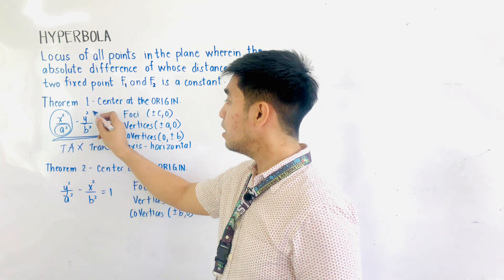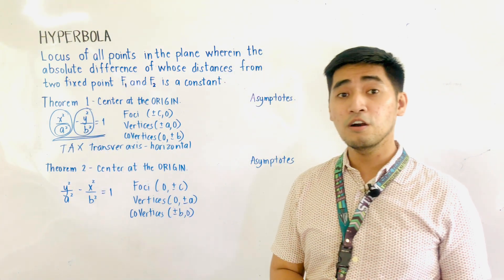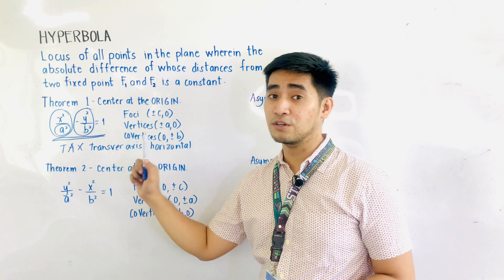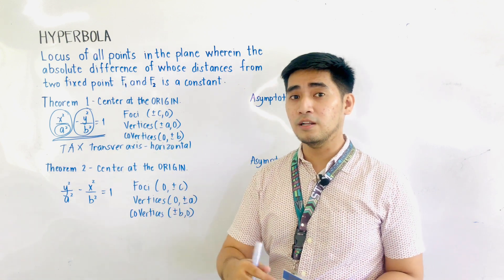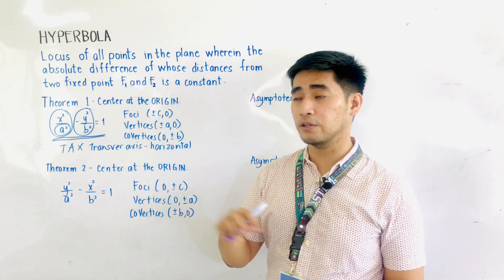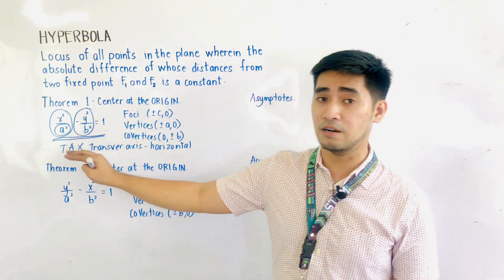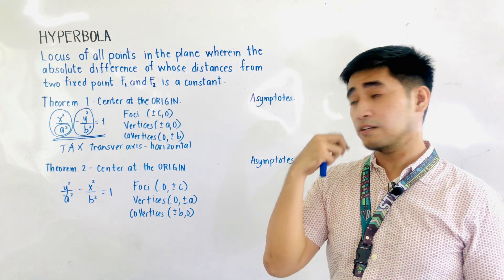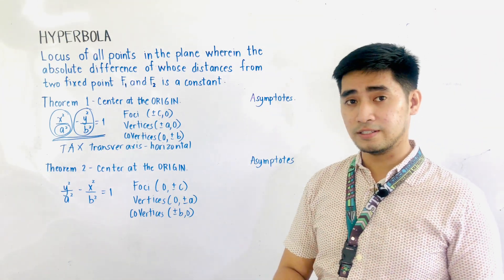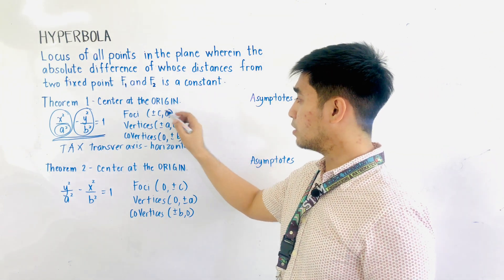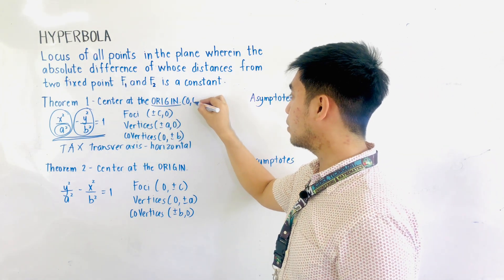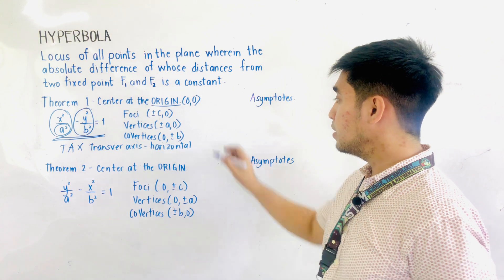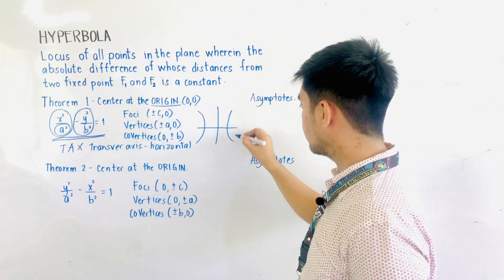If that is the transverse axis, therefore y² / b² is our conjugate axis. x² / a² is our major axis — major horizontal. But in hyperbola, we will be calling that as transverse axis x or transverse axis horizontal. And the conjugate axis for this theorem is the y-axis. So, the coordinate of the center is just located at the origin, and that is (0, 0). And since we have x² / a² minus y² / b², therefore this is our hyperbola.